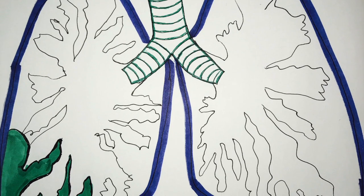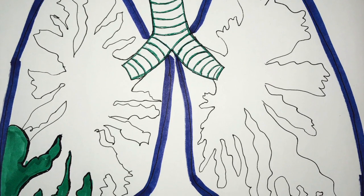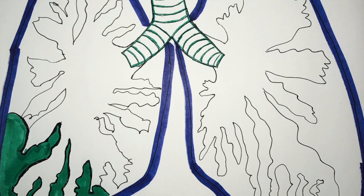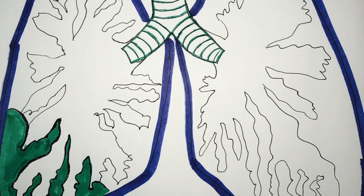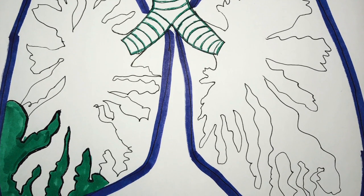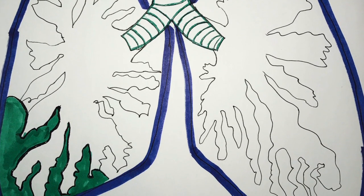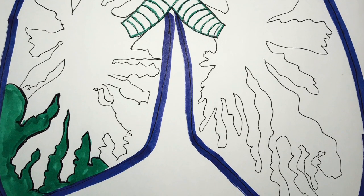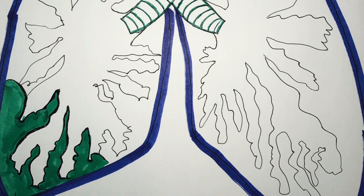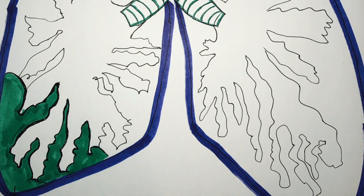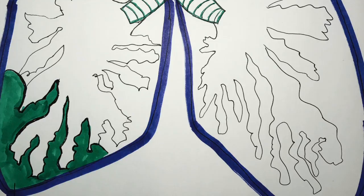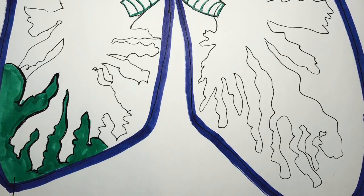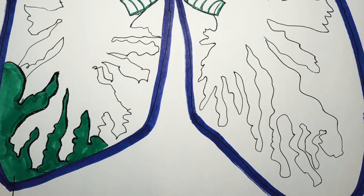Neutrophils also develop a neutrophil extracellular trap — a chromatin meshwork and antimicrobial protein-based mechanism. This mechanism allows neutrophils to trap extracellular bacteria and hinders the bacteria's ability to continue moving through extracellular fluid and into the intracellular fluid.